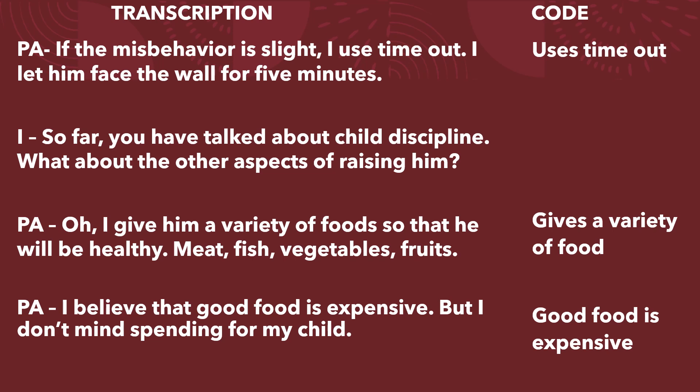You ask: 'So far you have talked about child discipline. What about the other aspects of raising him?' Participant A answers: 'Oh, I gave him a variety of food so that he will be healthy — meat, fish, vegetables, and fruits.' Code: gives a variety of food. Participant A continues: 'I believe that good food is expensive but I don't mind spending for my child.' Code: good food is expensive.